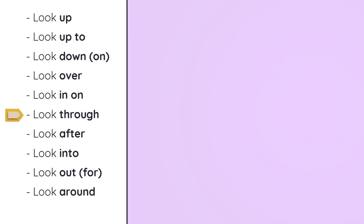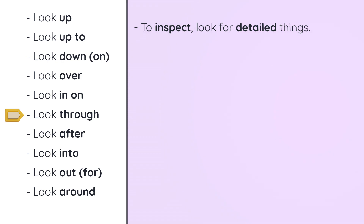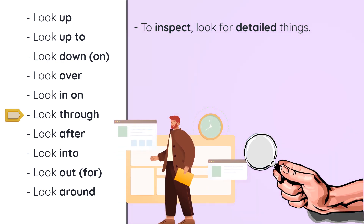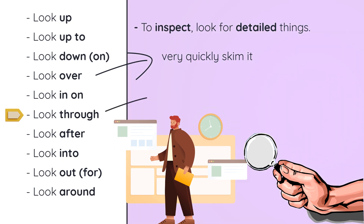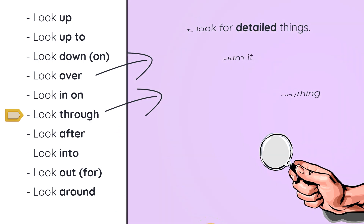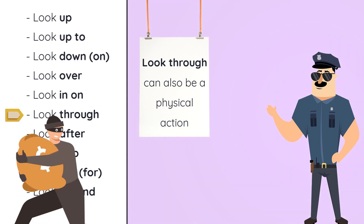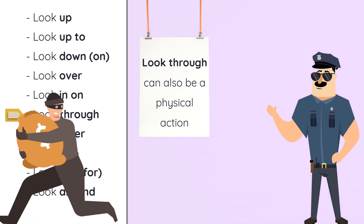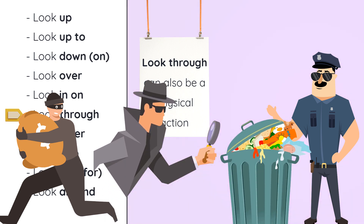Look through is also a little bit similar to look over, but a little bit more detailed. Look through means inspect — look for detailed things. So, I want you to look through my essay and find a particular thing. Look over is very quickly skim it and look for any problems; look through means I want you to go in detail and find anything. Look through can also be a physical action — for example, the police trying to find a criminal will look through their garbage to find any clothes. Look through means inspect, look for something specific.